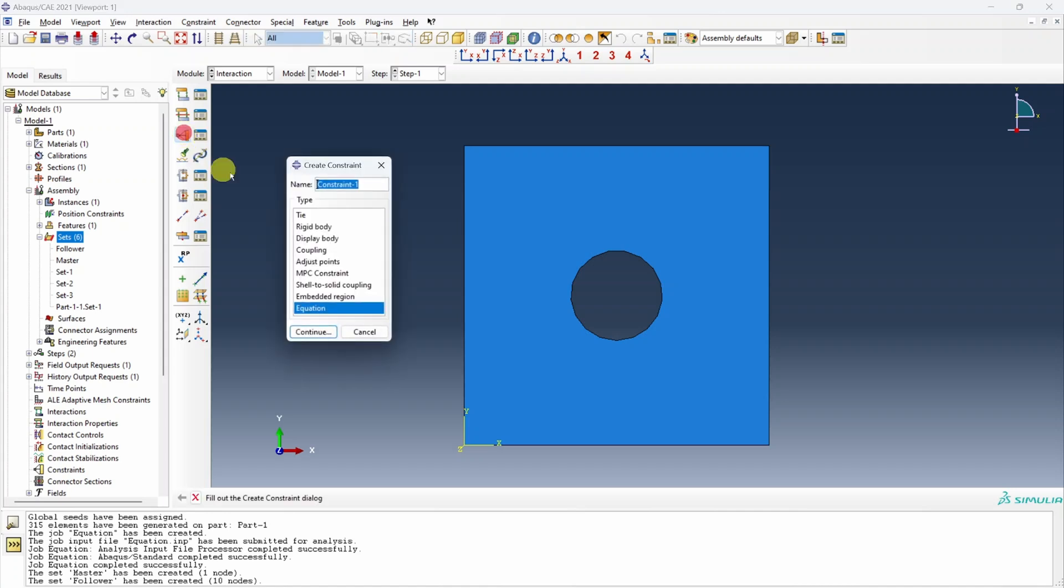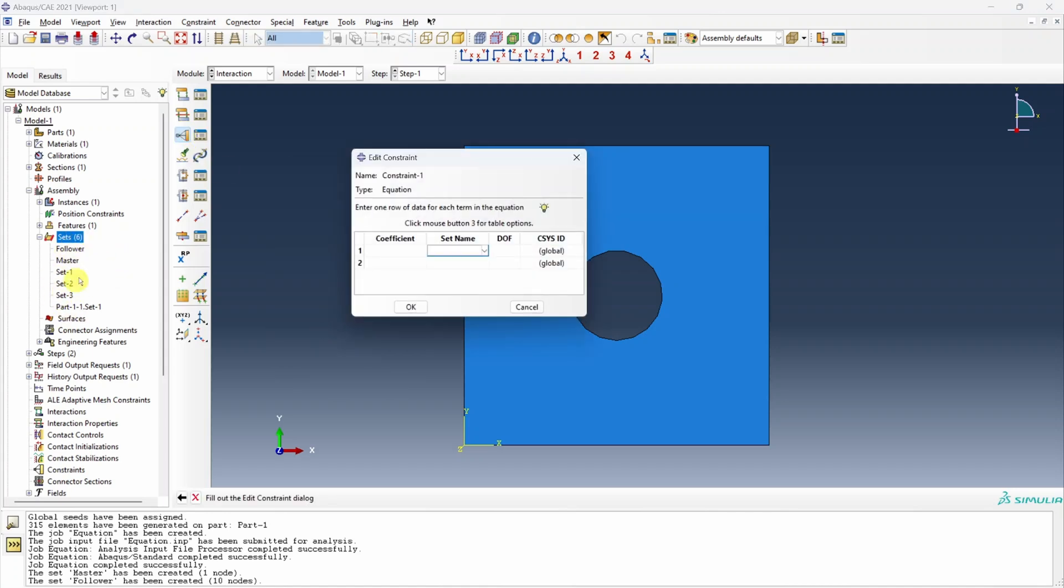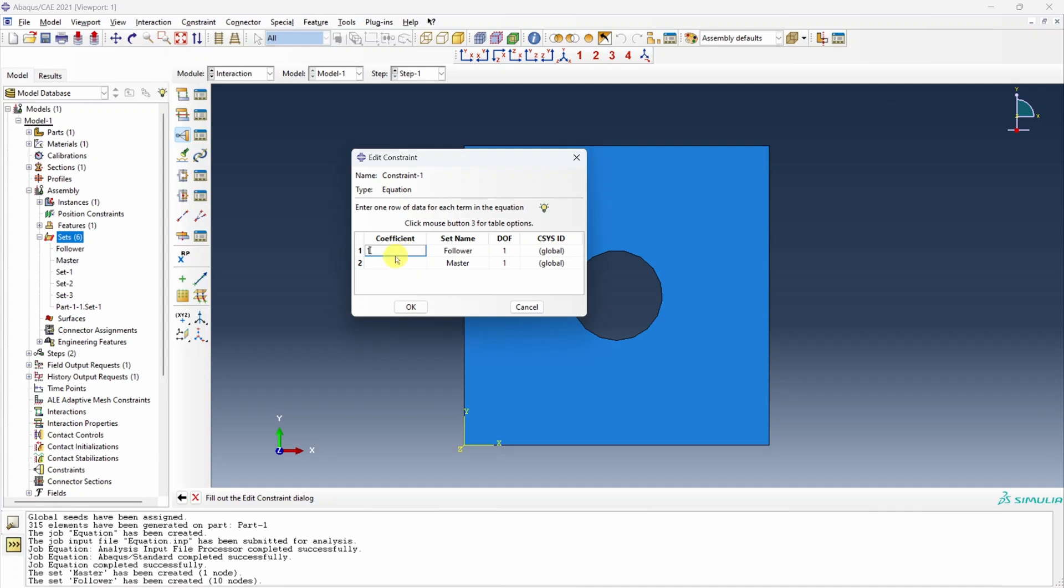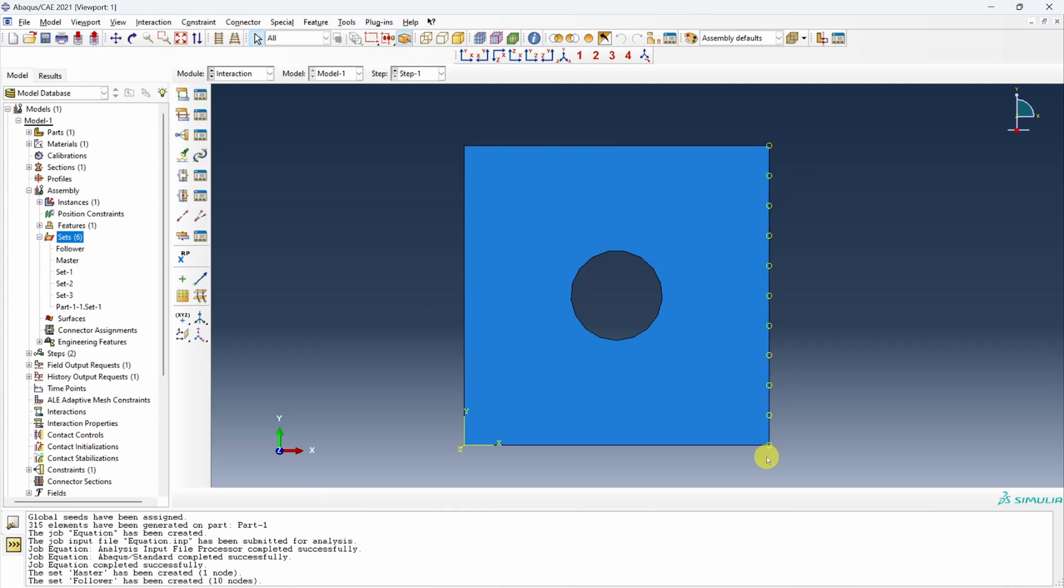Let's go back to that constraint. And whatever sets are defined over here, those you can choose from here. So first set will be follower, next set will be master. In the degree of freedom we have to define either one or two. That means x degree of freedom or y. And then coefficient is nothing but the coefficient of this first term. Now the first term coefficient is positive one and the second term coefficient is negative one. So for follower it is positive one and for master it is negative one. So one and minus one.